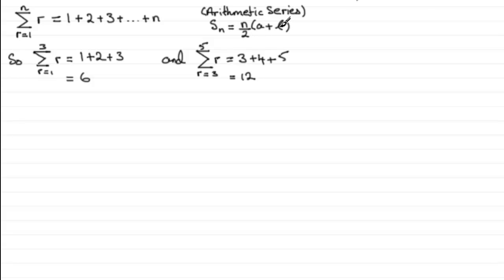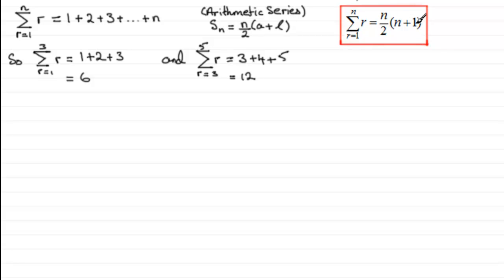So the sum of R from 1 to n equals n over 2 times (n plus 1). You'll often see this printed in formula books or tables. We can verify this: when n equals 3, we get 3 times 4 divided by 2, which equals 6 — exactly the answer we had. This formula is very useful when n is a large number and we can't sum the series visually.